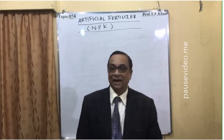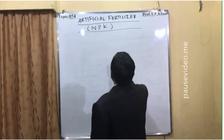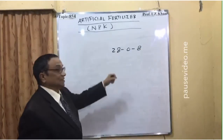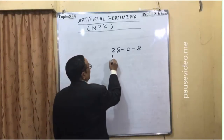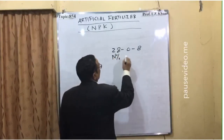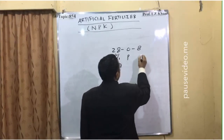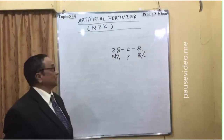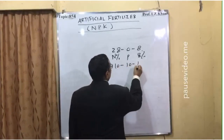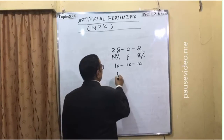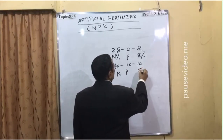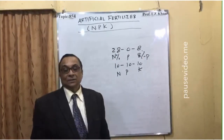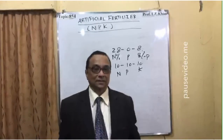Nowadays on the bag they write numbers like 28-0-8, which means 28% nitrogen, 0% phosphorus, and 8% potassium. If the bag reads 10-10-10, it means nitrogen, phosphorus, and potassium are present in the same ratio and same quantity.